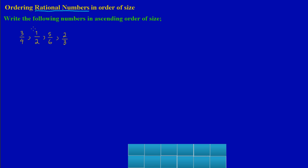The first thing I'm going to do is find the LCD of all the numbers. LCD means the lowest common denominator, and by intuition the lowest common denominator would be 12, because 4, 6, and 3 can all go into 12 without leaving a remainder. That's the smallest such number, so we would have 12 as our common denominator.